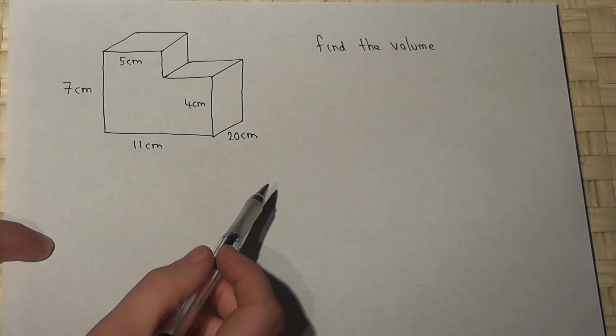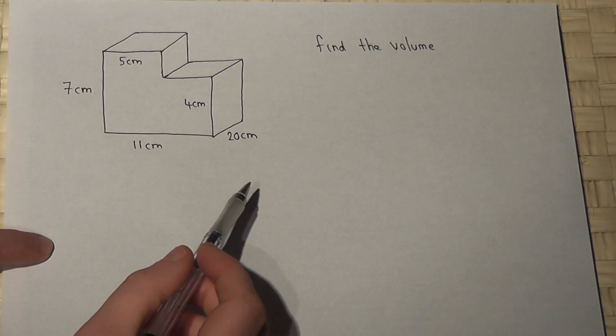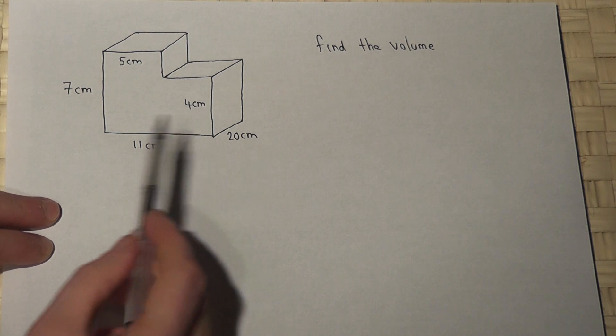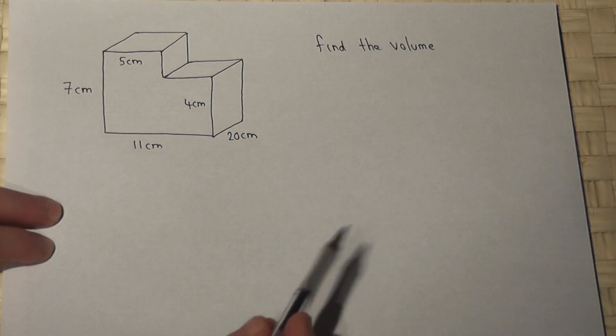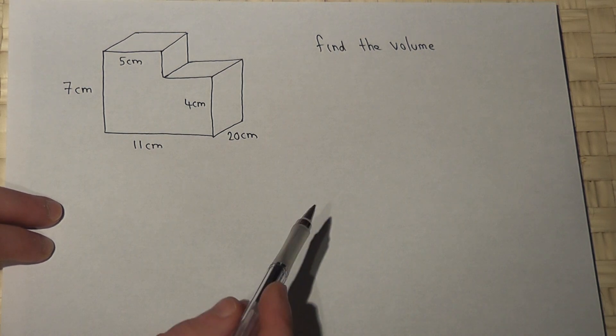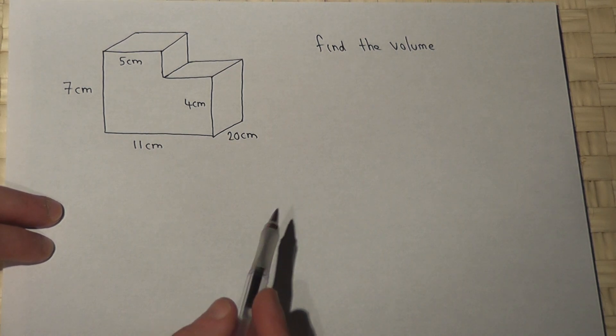This question is a fairly typical volume question where we've got a prism which happens to be an L shape with a depth of 20 centimeters and we're asked to find the volume.